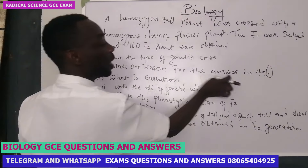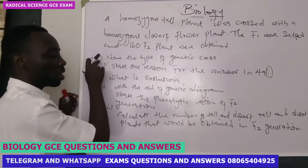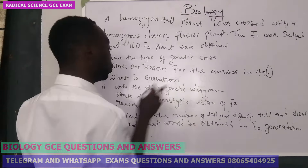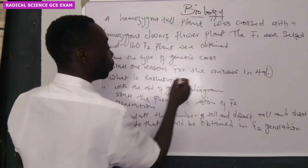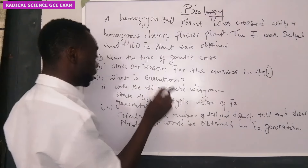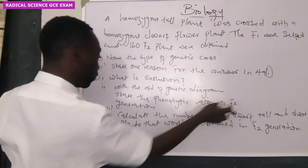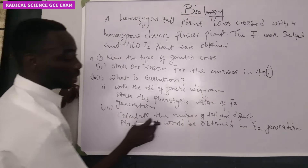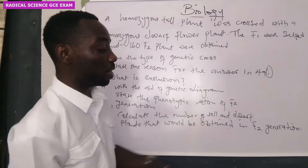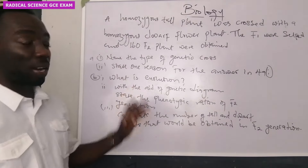State one reason for your answer to A number one. Part B says: what is evolution? And part B number one says: with the aid of a genetic diagram, state the phenotypic ratio of F2 generation. And calculate the number of tall and dwarf plants that will be obtained in F2 generation. So now let's take a look at these questions one after the other.